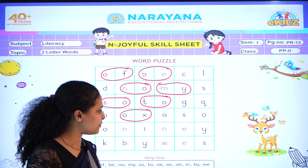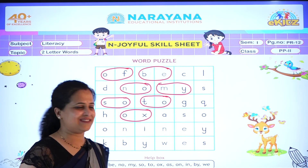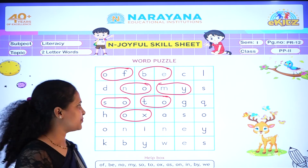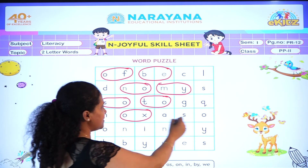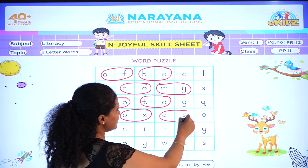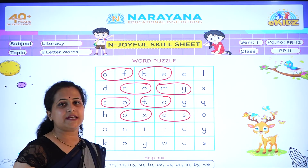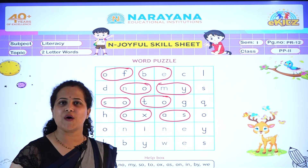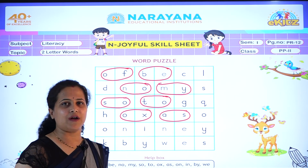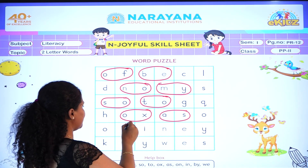We are left with five more words. A-S. As. Here is 'as'. Circle it. Now next word is 'on'. O-N, on. Where is 'on'? Here is 'on'.